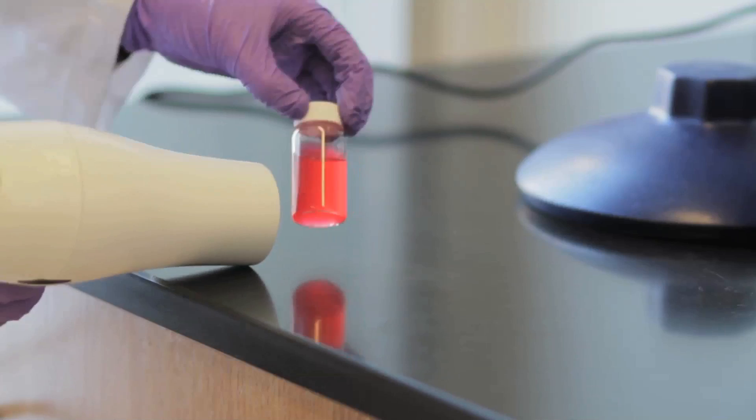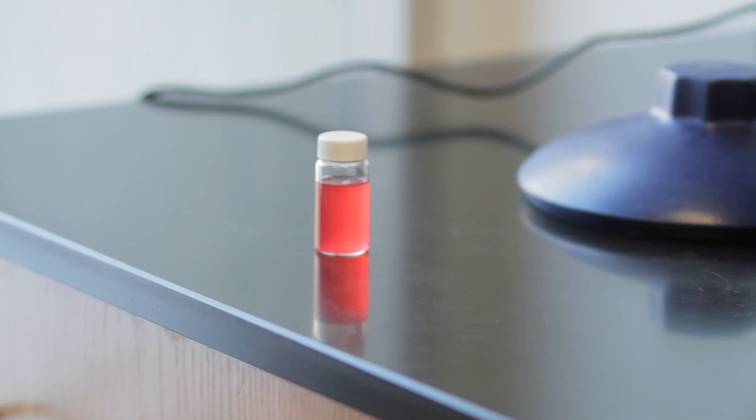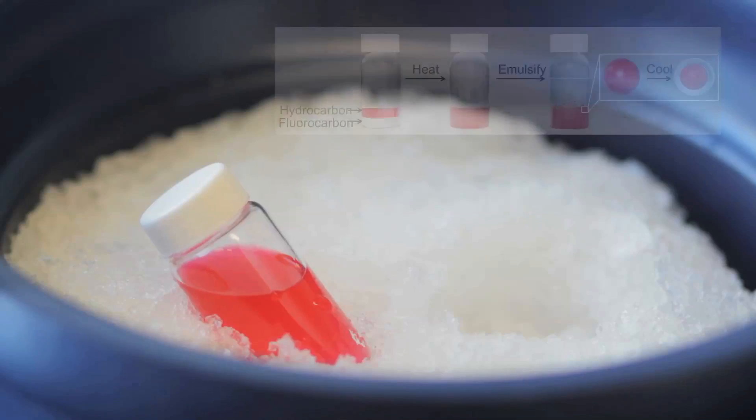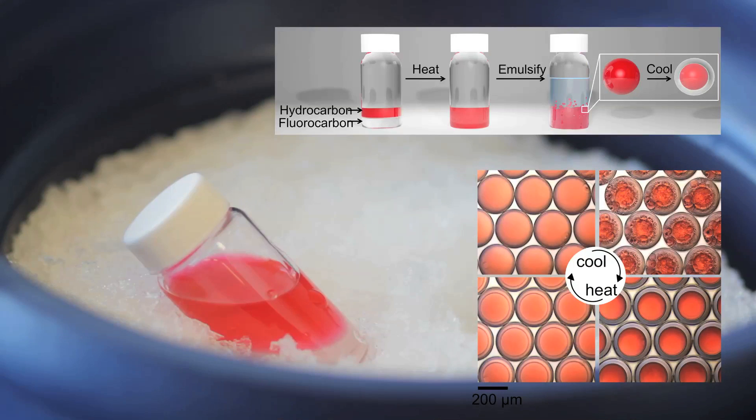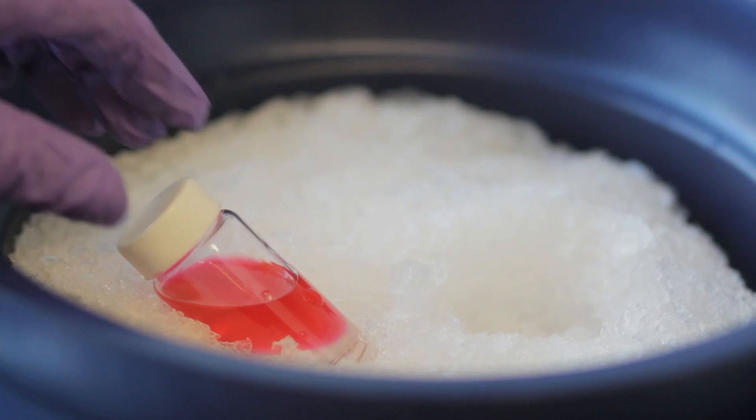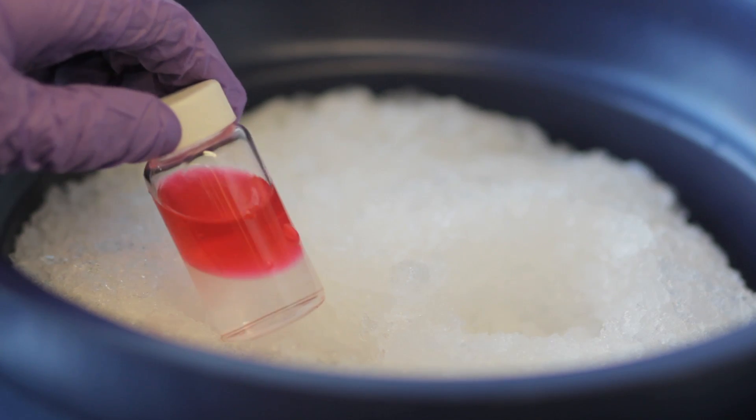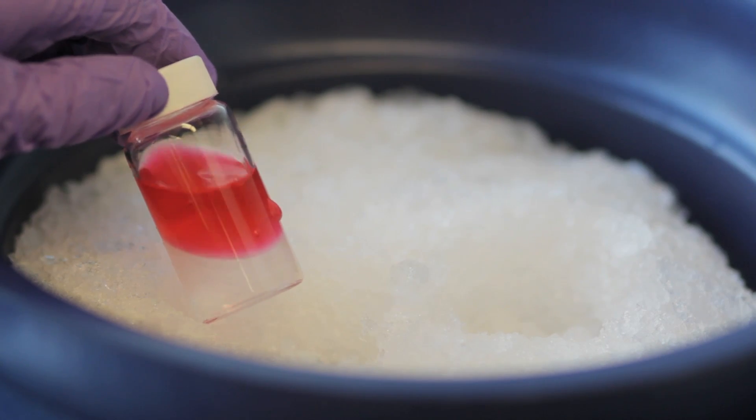We've used this mixing ability to make droplets consisting of hydrocarbon and fluorocarbons mixed together suspended in water. Later when we reduce the temperature, the hydrocarbons and the fluorocarbons unmix and we end up with a complex emulsion that consists of droplets of fluorocarbons inside hydrocarbons inside water or droplets of hydrocarbons inside fluorocarbons inside water.